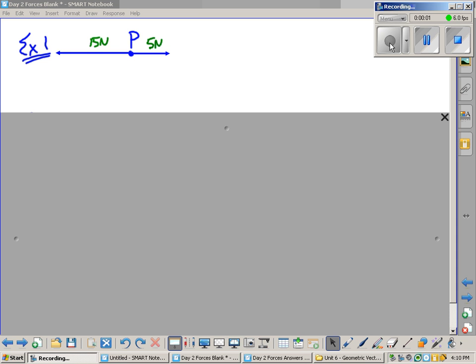Okay, so our first example is a simple addition of two vectors that are applied at vertically opposite directions. And this one I consider the tug-of-war example.